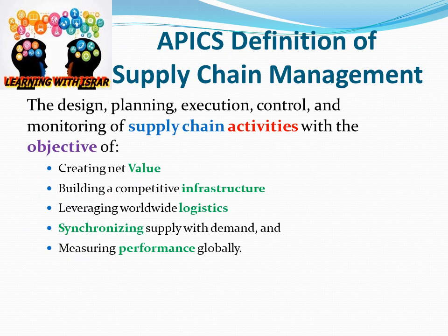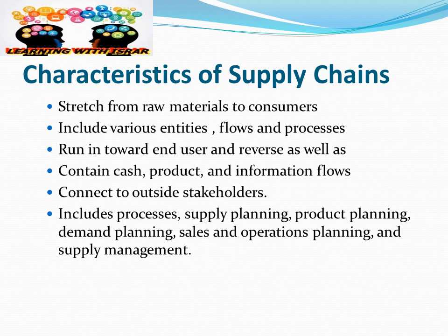Let's first define supply chain management. According to APICS, it is the design, planning, execution, control, and monitoring of supply chain activities with the objectives of creating net value, building a competitive infrastructure, leveraging worldwide logistics, synchronizing supply with demand, and measuring performance globally. This is the definition of supply chain management and its objectives.